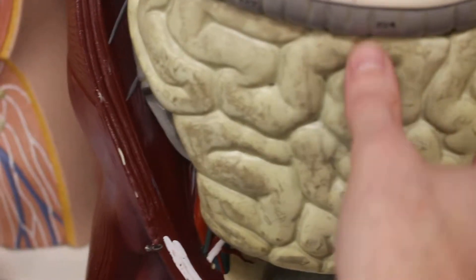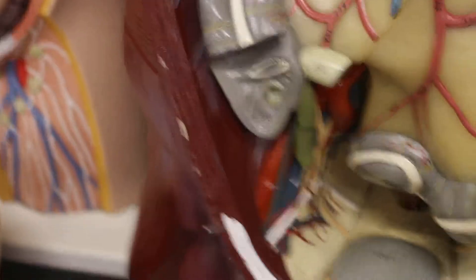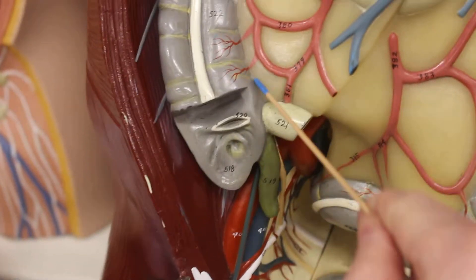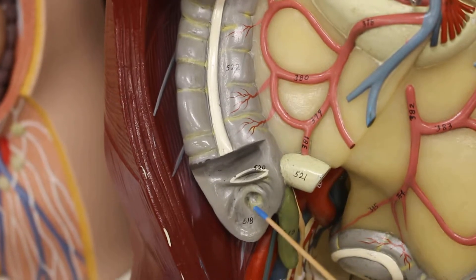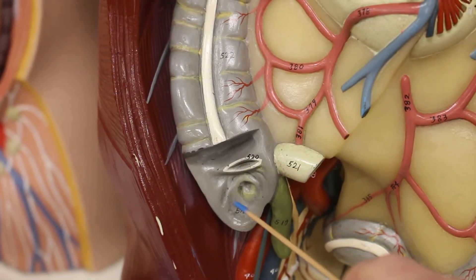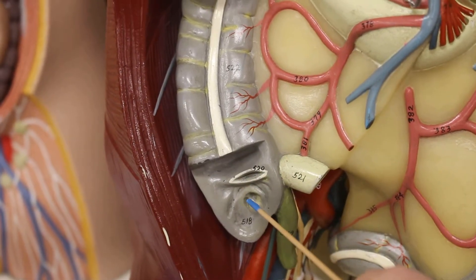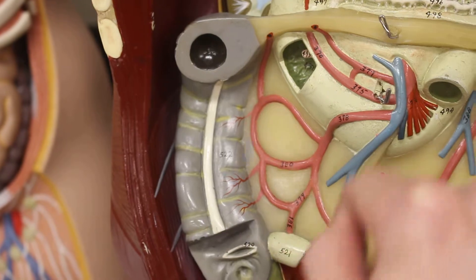The ileum then leads to the large intestine. So here's the end of the ileum. Here's the part of the large intestine. This here is the ileocecal sphincter which leads to the cecum of the large intestine. That's the appendix. Here's the transverse colon.